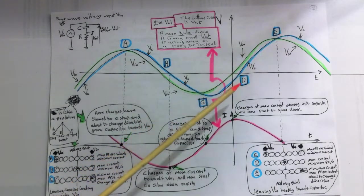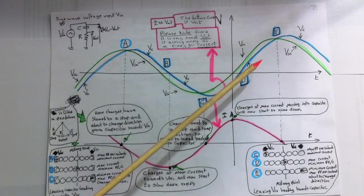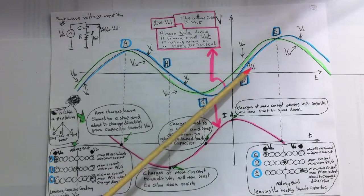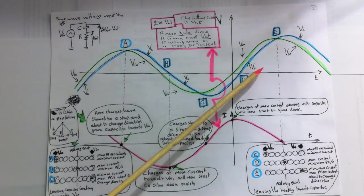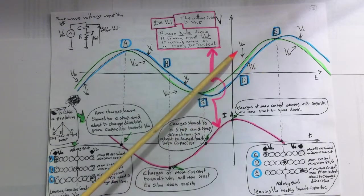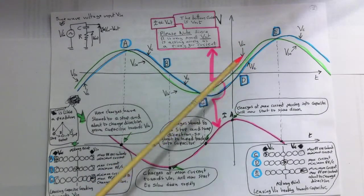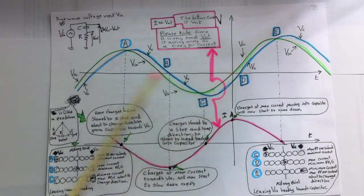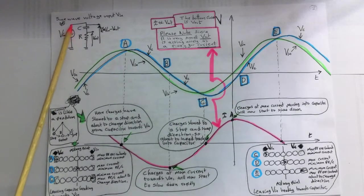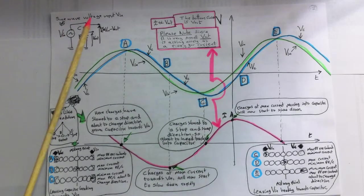So Vin now is higher than Vc. So charges then will flow from Vin to Vc, because Vin is higher. So charges are going to flow from the higher voltage to the lower voltage. They have now changed direction, and now flow into the capacitor. So now we're going this way. The charges now have changed direction, are coming into the capacitor.